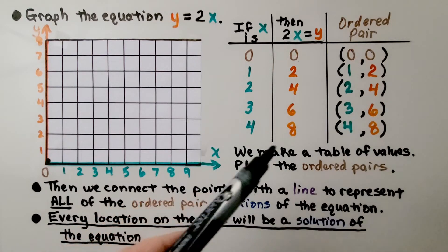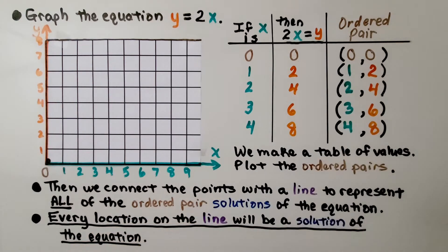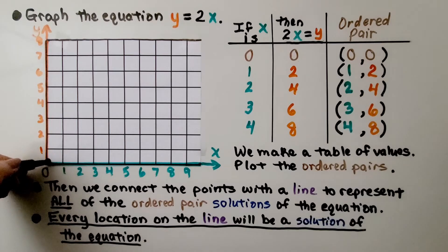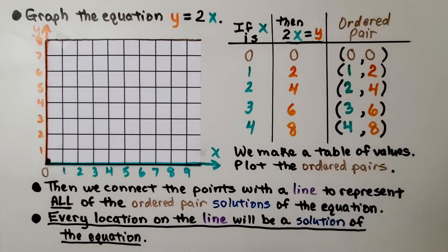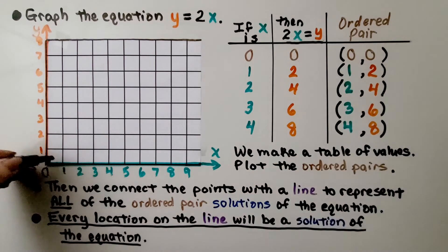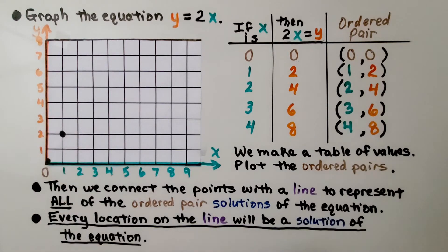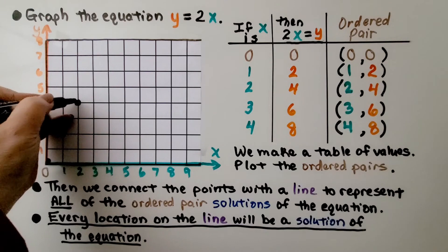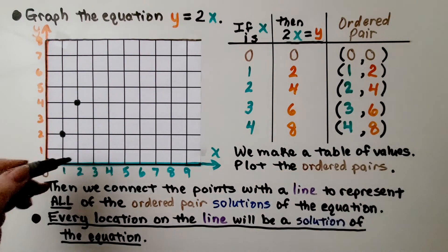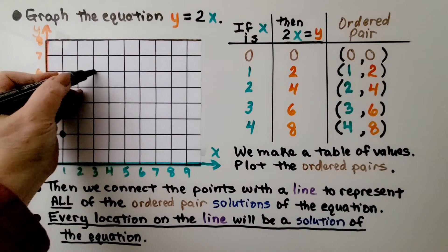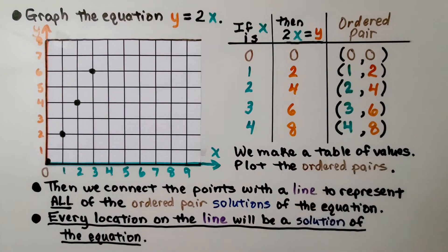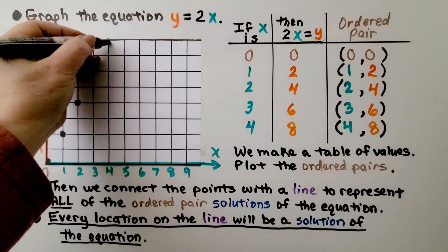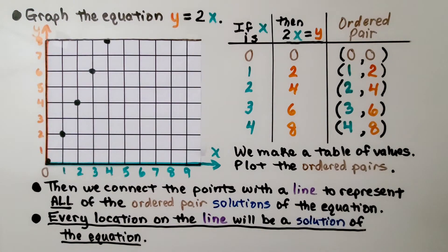If x is 3, 3 times 2 is 6. If x is 4, 4 times 2 is 8. Now we have our table of values and we can plot the ordered pairs. (0, 0) is right at the origin. Our next ordered pair, (1, 2): 1 for x and 2 for y. Then (2, 4): 2 for x and up to 4 for y. Then (3, 6): 3 for x and up to 6 for y. Then (4, 8): 4 for x and 8 for y. We connect the points with a line to represent all of the ordered pair solutions.